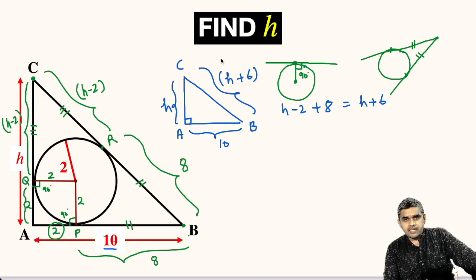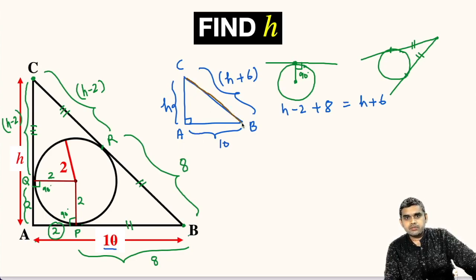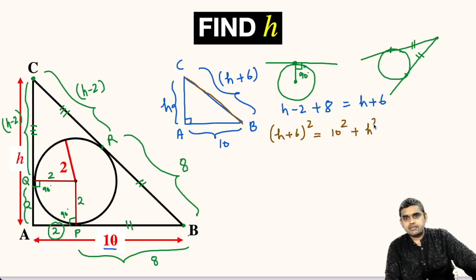Now, we will apply Pythagorean theorem in this triangle ABC. We will get BC that means hypotenuse squared. So, I am writing H plus 6 whole square equals AB square that means 10 square plus AC square that is H square.